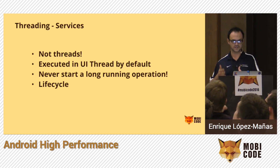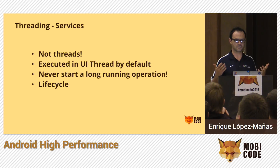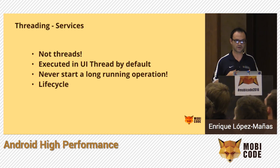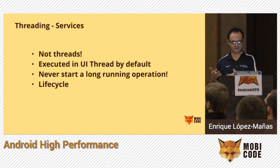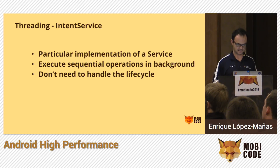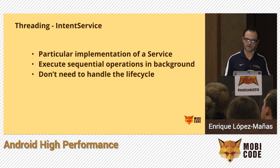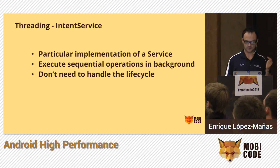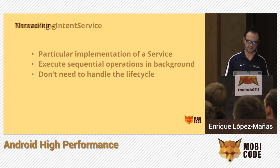Services are not threads. Many people think a service is a thread — perhaps from Unix — but not in Android. They are executed in the UI thread by default, and you need to explicitly specify if you want to run them in another thread. You should never start them for a long-running operation, and they have their own lifecycle like an activity or fragment. IntentService is a particular implementation that executes operations sequentially in the background and doesn't require handling its own lifecycle — it is totally independent.